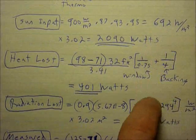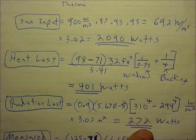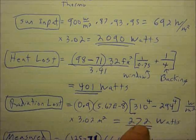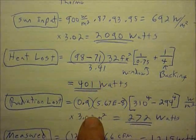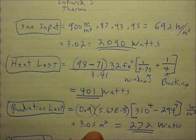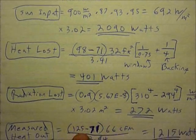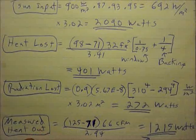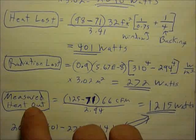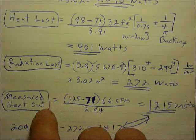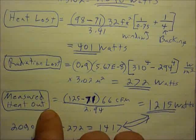Take the Sun inputs and subtract these two heat losses or these two losses and that should tell me how much came out of the box. But a more accurate way is to measure it directly by the heat capacity of air.